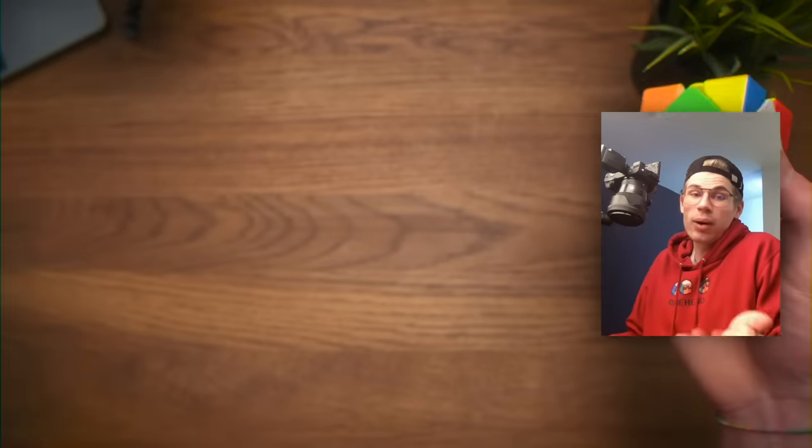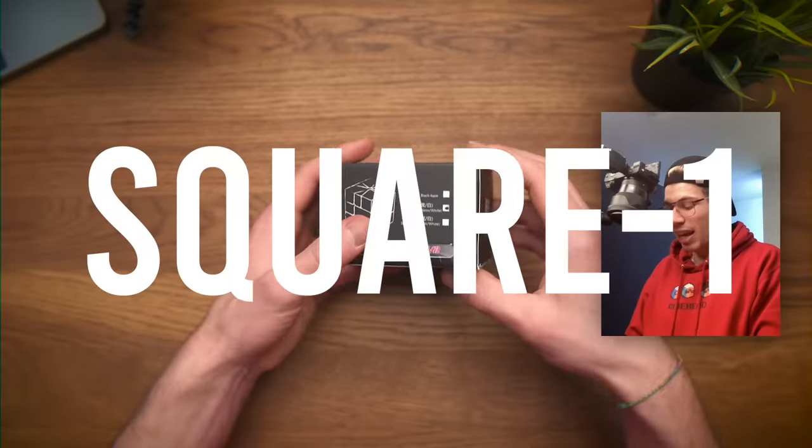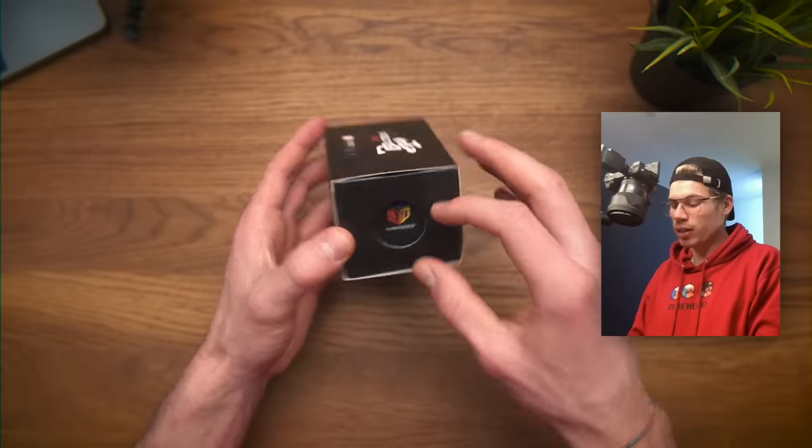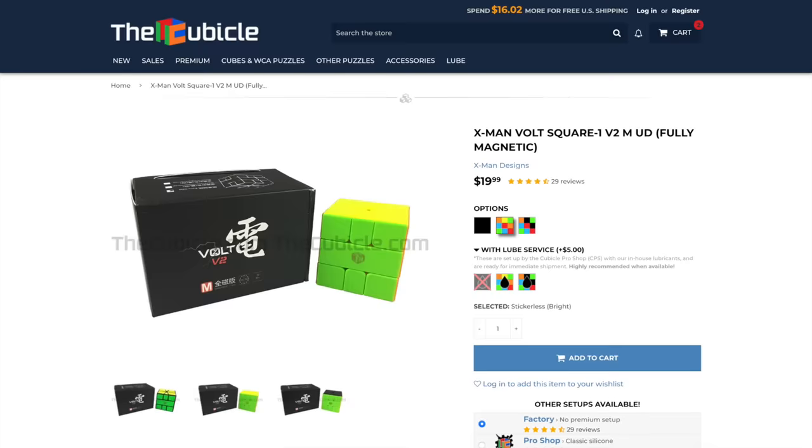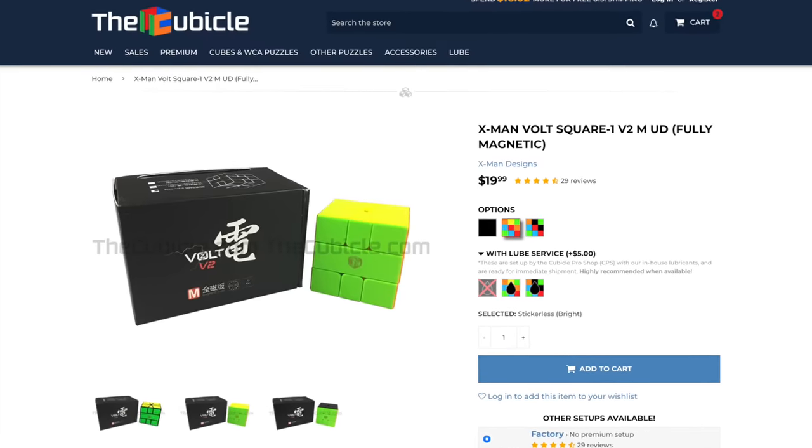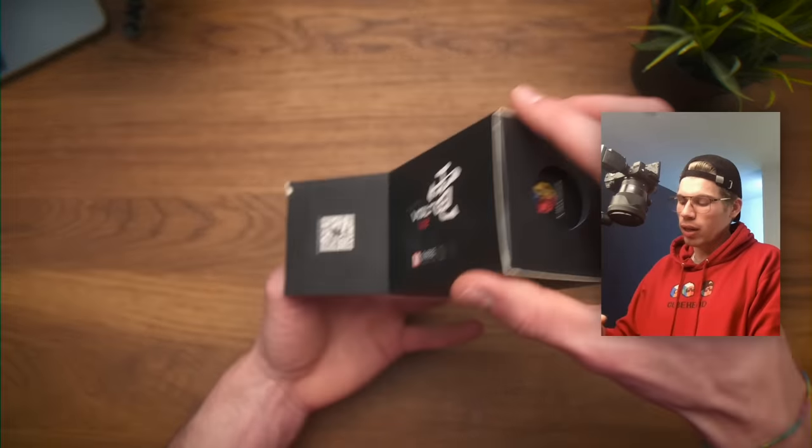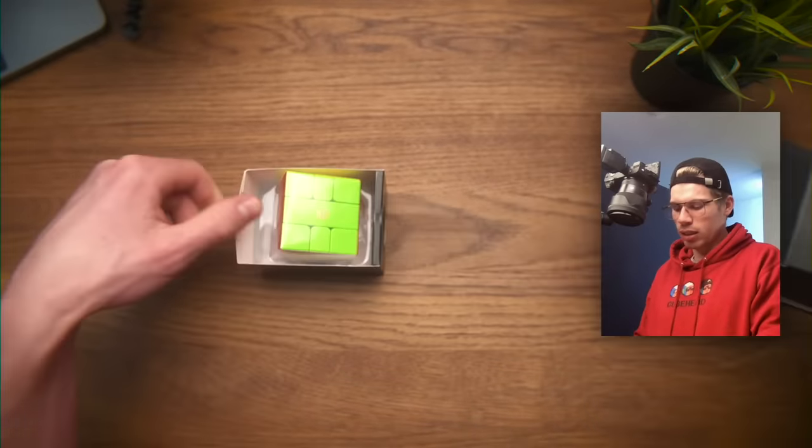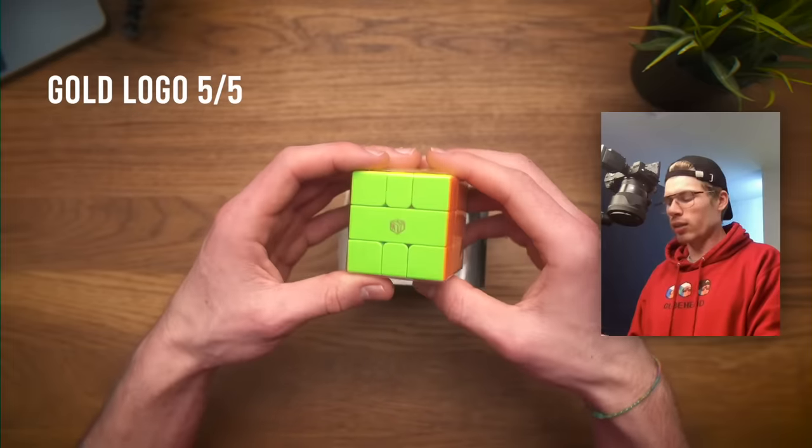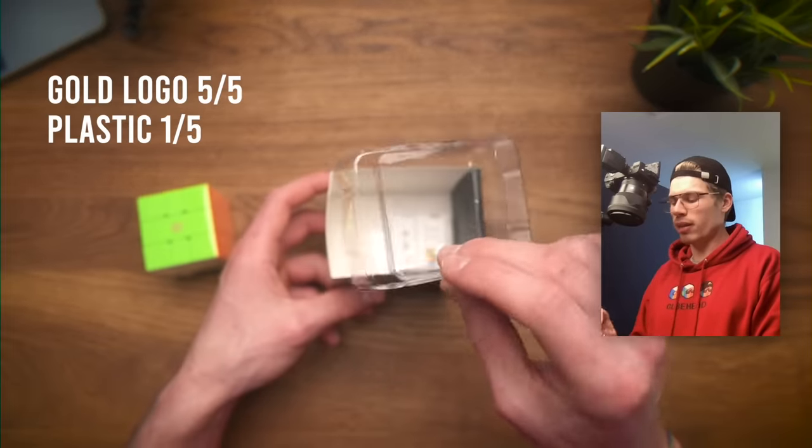Next up we could do a puzzle I've never solved before, which is a square-1. I've never solved a square-1, I've never touched one. This is the YuXin Little Magic V2. Once again I think this is the best square-1 on the market, so thanks Phil for spoiling me. I like the gold logo. I don't like that this is plastic. I'm neutral about the paper and this is a very tiny spring.